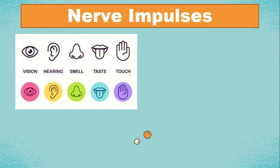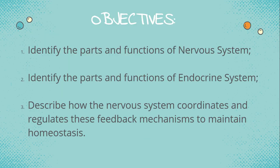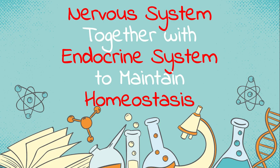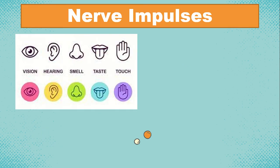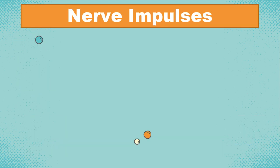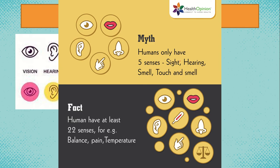Aside from the five major senses, there is a myth that humans only have five senses — sight, hearing, and smell — but the fact is humans have at least 22 senses. Other senses include the balance sense, pain sense, and temperature sense.